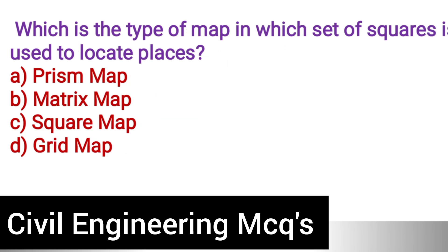Next question: Which is the type of map in which set squares are used to locate places? Option A: Prism map. Option B: Matrix map. Option C: Square map. Option D: Grid map. The correct answer is option D, grid map.